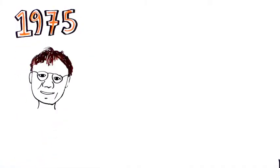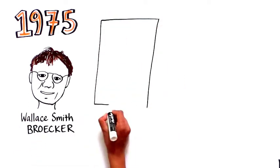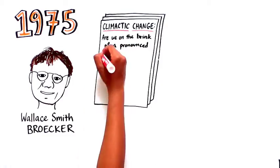In 1975, geochemist Wallace Smith Broker published a report called Climactic Change – Are We on the Brink of a Pronounced Global Warming?